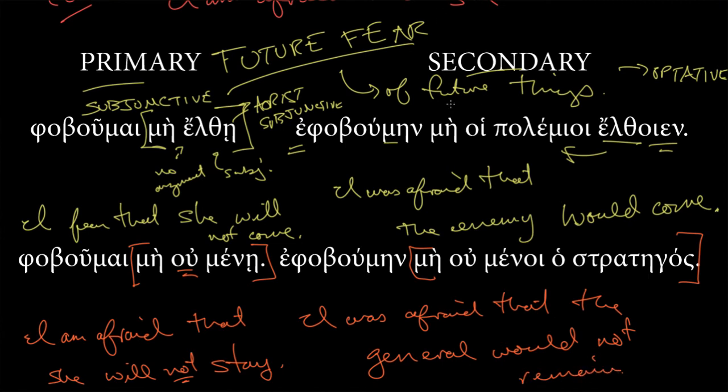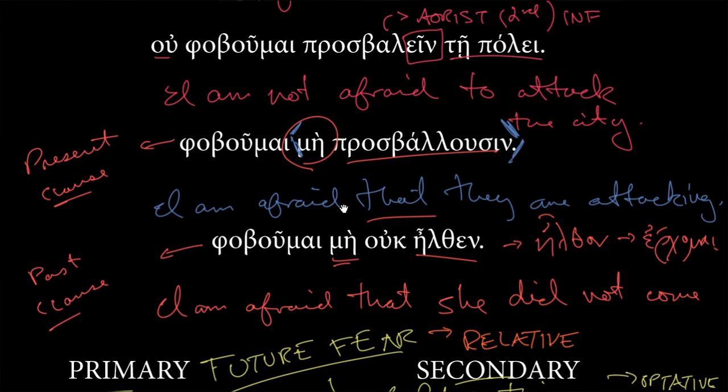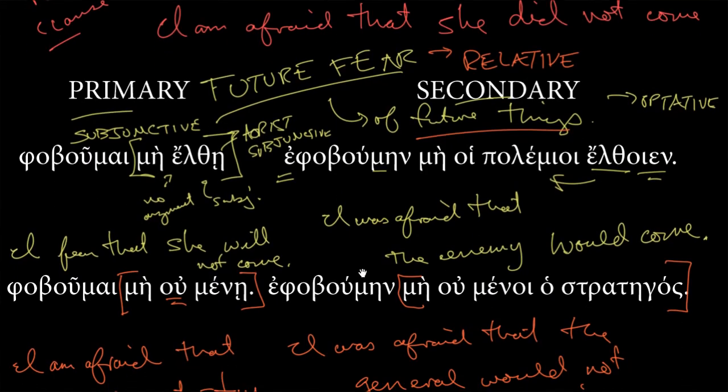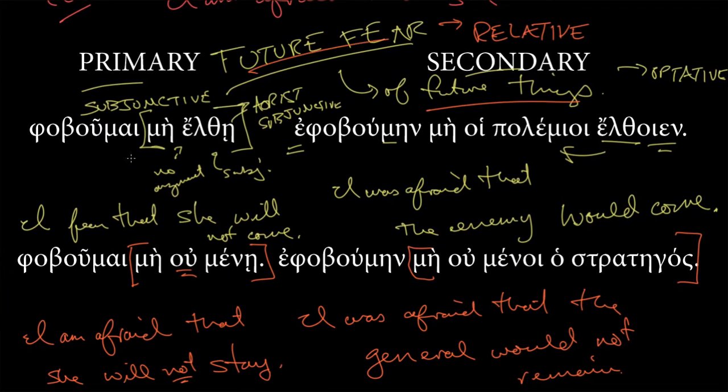So, note, again, that the not here is from the οὐ. The μή has nothing to do with that. That's just part of the fearing clause. Versus, I was afraid that the general, because we have a nominative subject there, would not remain. So, again, these are future fears, or fear of future things relative, maybe I should emphasize that, relative to the time of the main verb. That's why we're getting our sequences, that's why we're getting subjunctive and optative. If it's a present fear, something that's at the same time as the verb, or a past fear, I am fearing that relatively in the past that she did not come. Here, we've actually got, moving into the future, we've got to pay attention to these different moods.